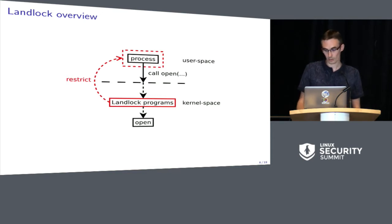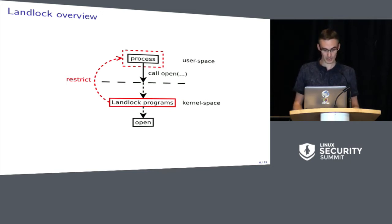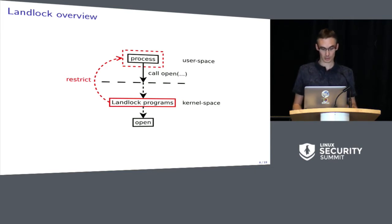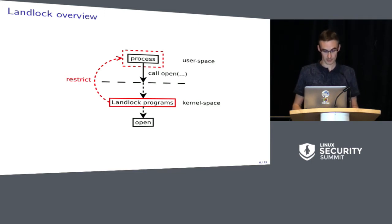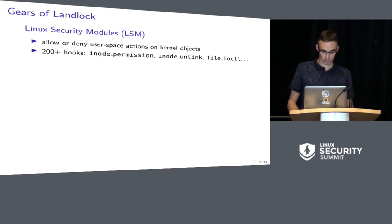How does it work? This diagram gives you the intuition. It is pretty similar to how seccomp works — how seccomp can apply a security policy. The process which wants to sandbox itself creates a security policy and loads it into the kernel. This policy is a set of eBPF programs which may be triggered for some specific actions and can only restrict the process which loaded it. So if this process wants to call the open syscall, this set of programs will look at the request and allow or deny the access. Landlock is made with multiple important parts of the Linux kernel.